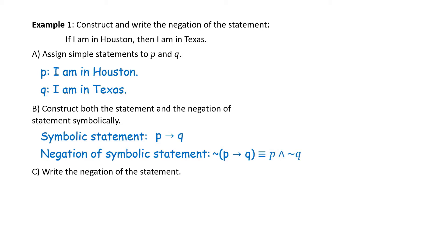Using those symbols, we go to Part C and write the negation in words. So we would have: I am in Houston and I am not in Texas.